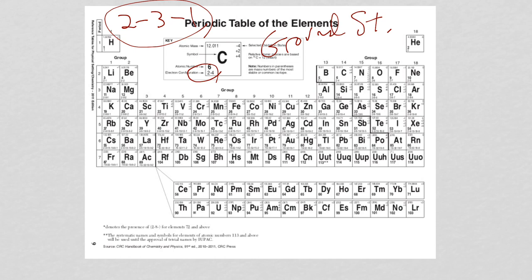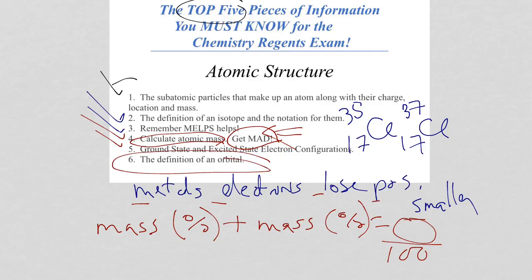The last one, the definition of an orbital. Orbitals are the regions of space where we're likely to find electrons. This is the present-day model, also known as the wave mechanical model. Electrons don't orbit around the nucleus. That was the Bohr model, or what was thought based on the Bohr model. But it's a region of space where we're likely to find an electron. Go over these pieces of information, because these are the ones that show up most often. There is more information with regards to atomic structure that you need to know. But this information, you must know.